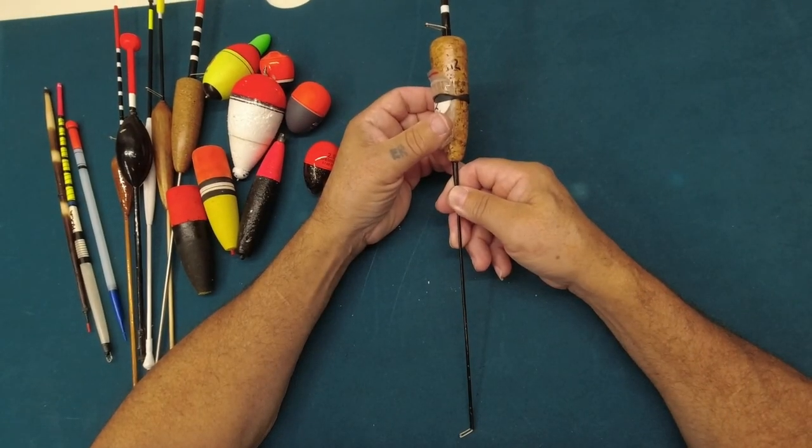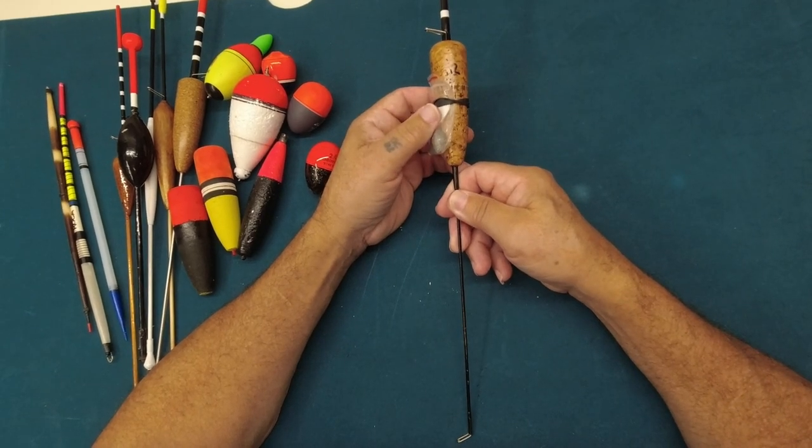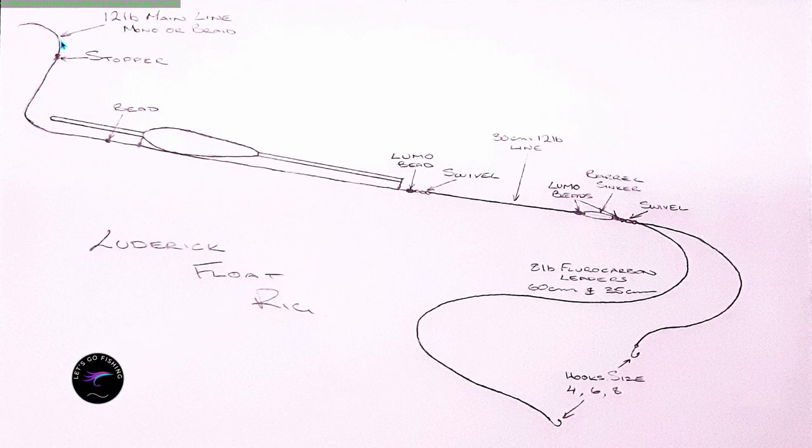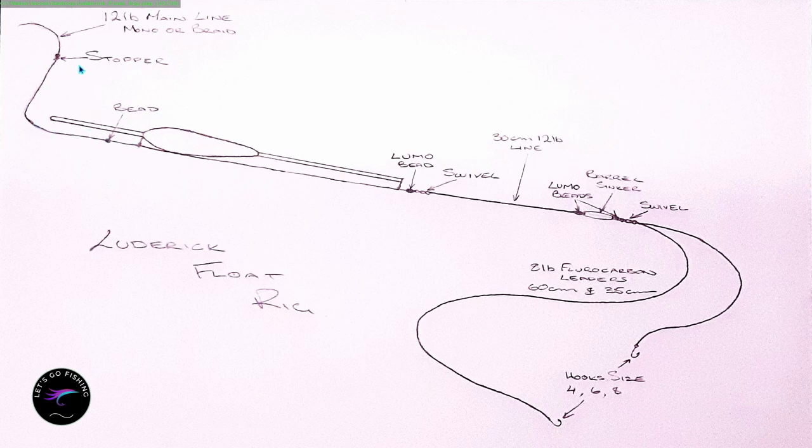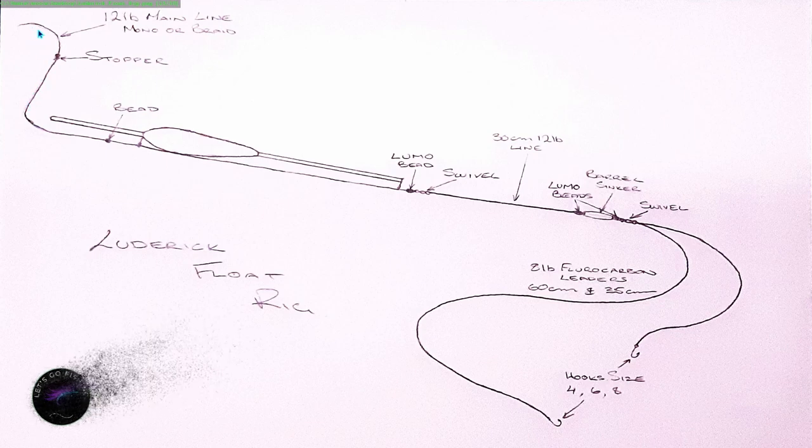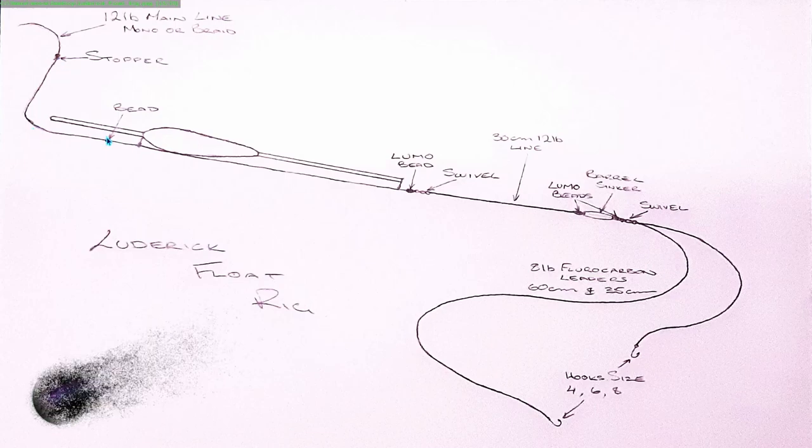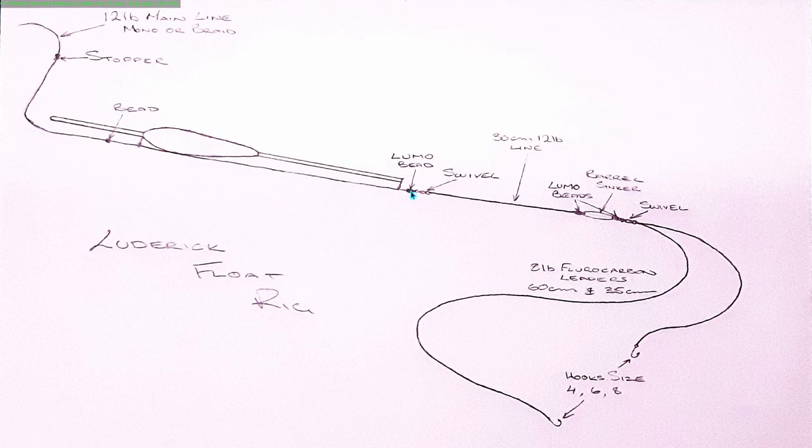So for catching blackfish or luderick, this is the way you rig up. This is the luderick float rig that I use. I use 12 pound line for the main line, mono or braid. I normally go with braid and then put 12 pound mono on it. I have a stopper up the top and a bead, and that runs through the float to the swivel, tied off on the swivel. I have a lumo bead. Now the lumo beads I color in with texta black because I personally just like a black lumo bead.